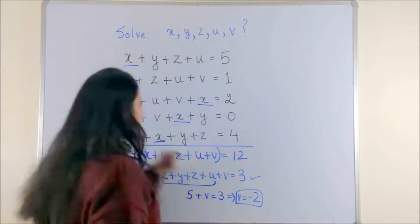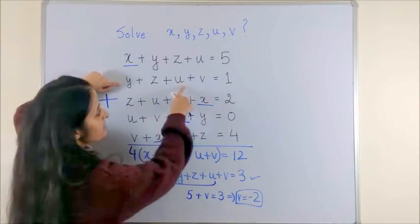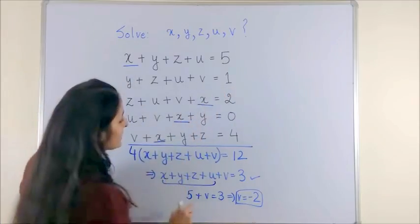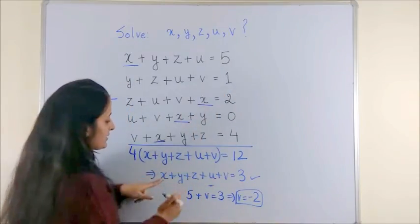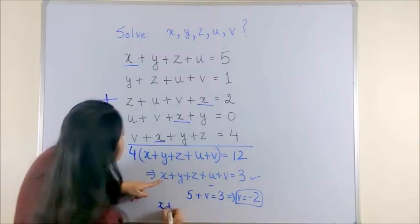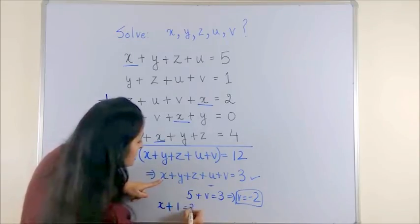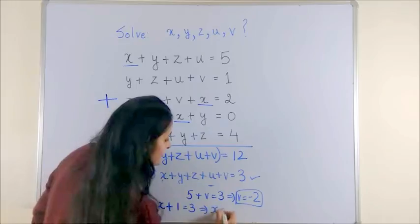Now, similarly, in the second one, you are given y plus z plus u plus v is 1. So, that means what we are not given this time is our x. So, I retain my x plus 1 is equal to 3, which gives us x is 2.